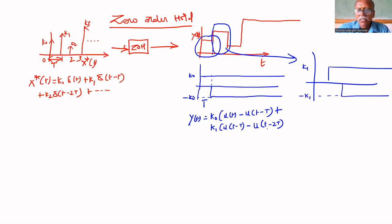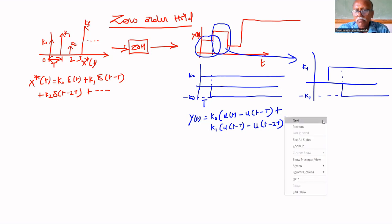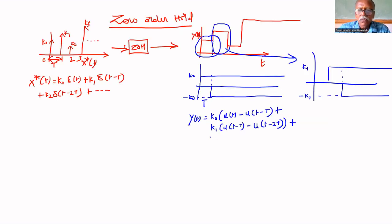If you add these two, you get K naught U(T) minus K1 U(T minus T) minus U(T minus 2T) plus K2 U(T minus 2T) minus U(T minus 3T), plus etc.